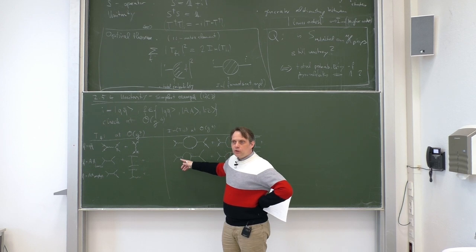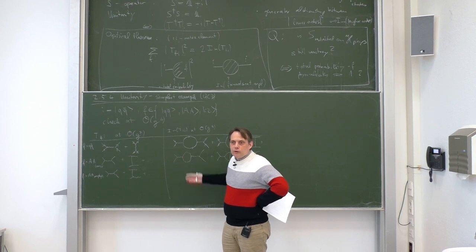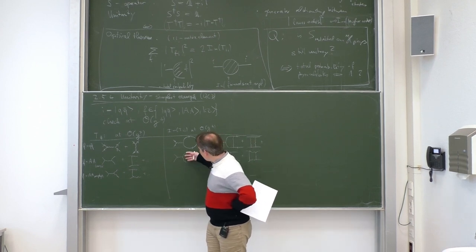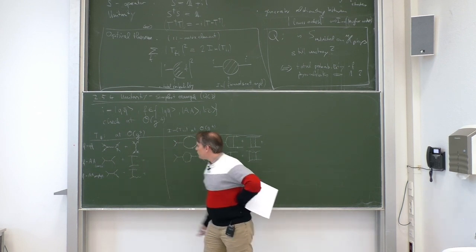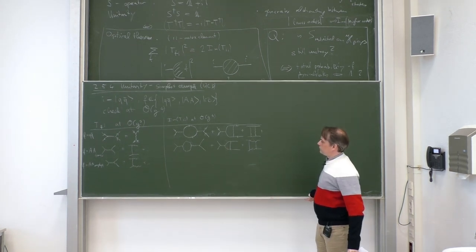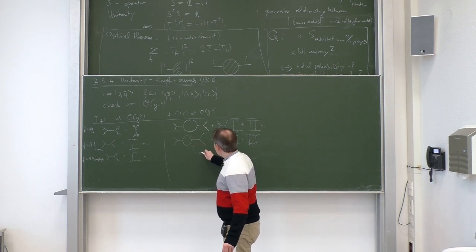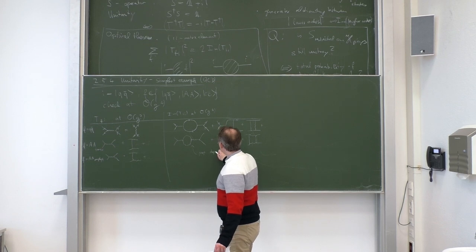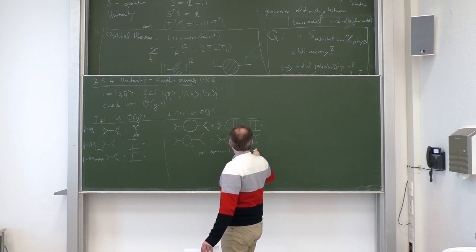The gluon propagator comes from gauge fixing in the Lagrangian and necessarily contains unphysical degrees of freedom and a dependence on ξ, the gauge parameter. So this diagram contains both physical and unphysical information and corresponds to both. The propagator depends on ξ and on unphysical degrees of freedom.